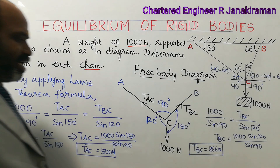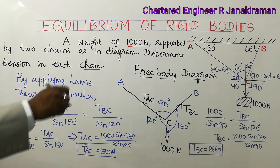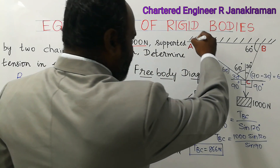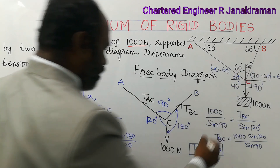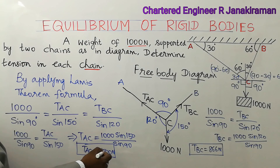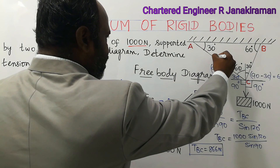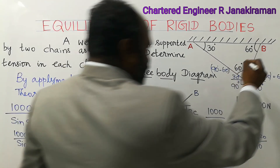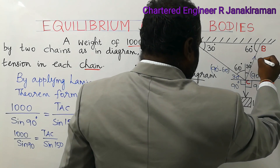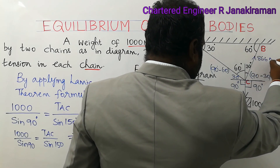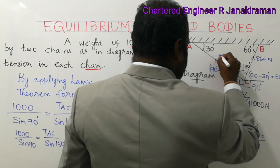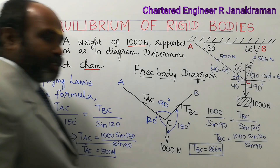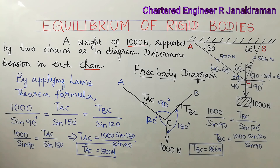So the chain which carries the suspended weight of 1000 Newton: tension in chain AC will be 500 Newton, and the tension in chain BC will be 866 Newton. This is the suspended weight of 1000 Newton, suspended at an angle. Thank you.